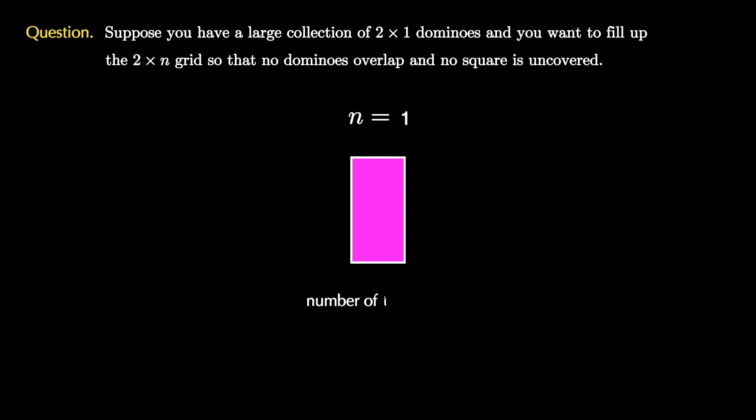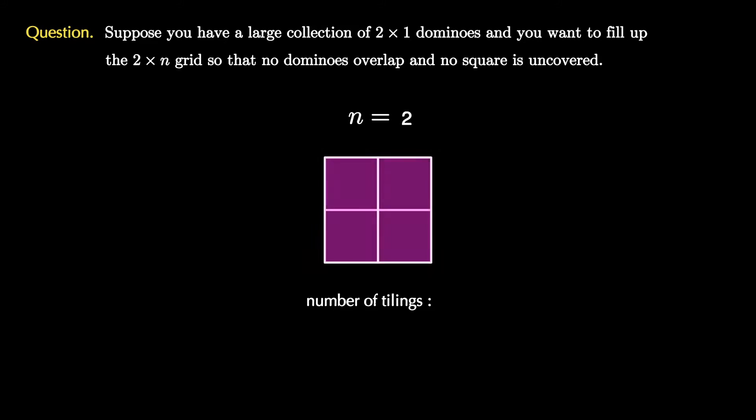For instance, when n equals 1, there is just one such arrangement and we call this a tiling of the 2×n board. When n equals 2, there are two such tilings because we can put both dominoes vertically or both dominoes horizontally, like this.